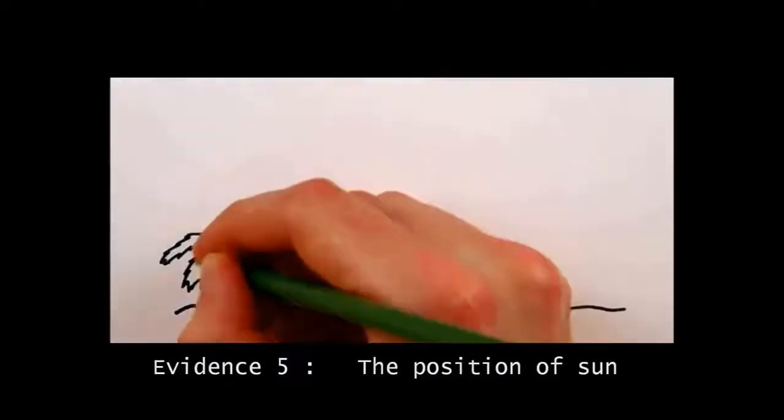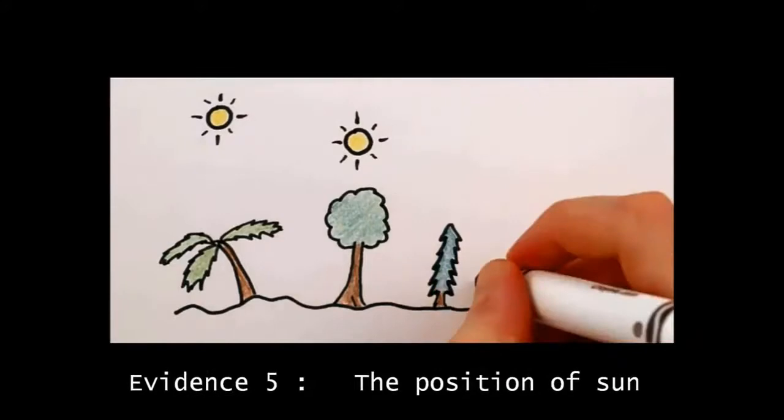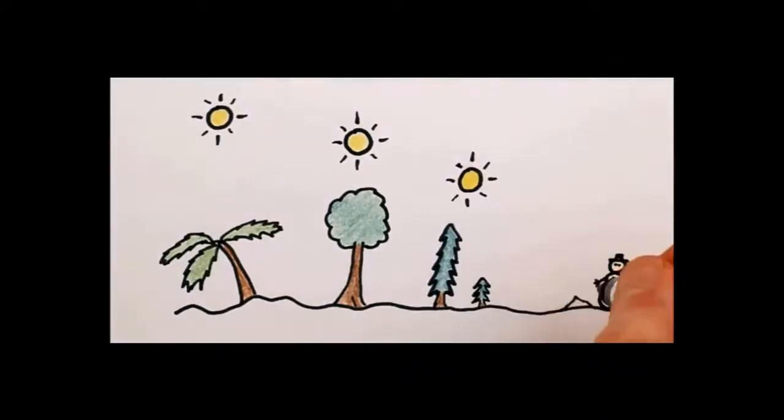Evidence 5: The position of sun in general gets lower and lower in the sky as you travel away from equator towards a higher latitude. One can use this method to directly measure the curvature of the Earth.